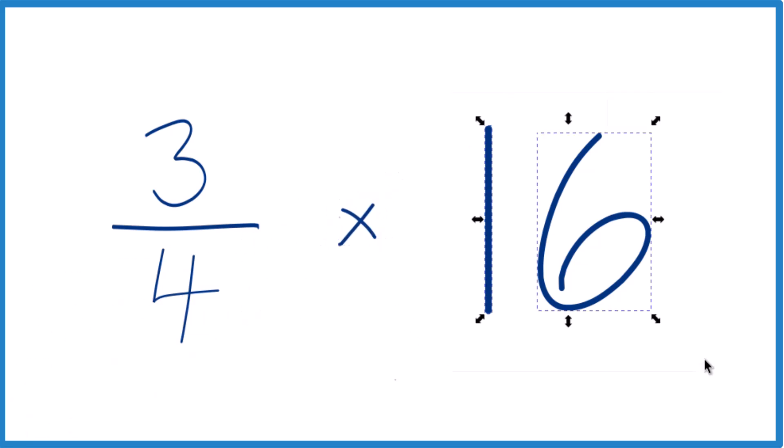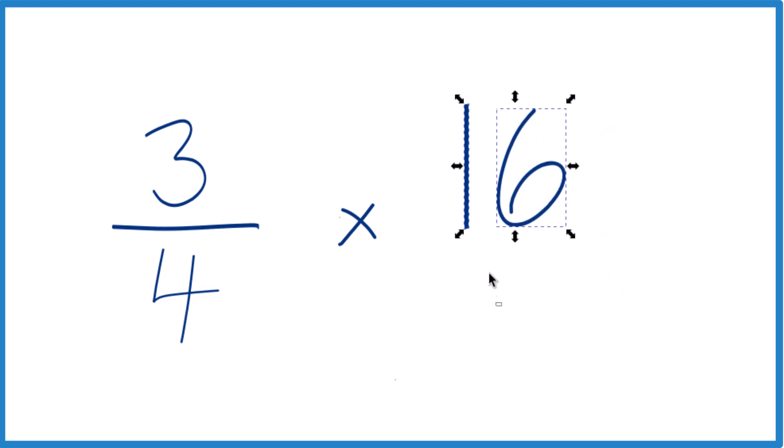We can take the 16 here, and instead of 16, let's call it 16 over 1. It's still 16, but now the numerators and denominators, they line up real nice.